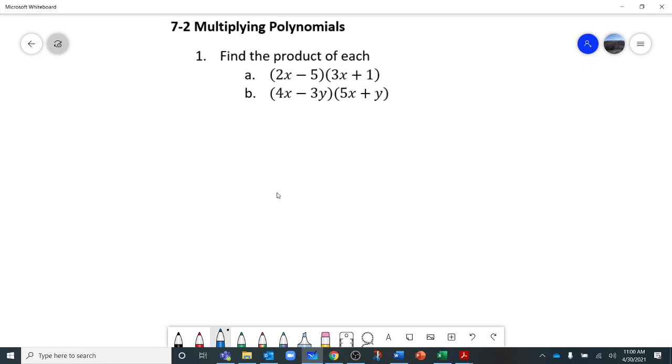All right, 7-2, multiplying polynomials. Number one, find the product of each. Okay, so we have two problems here.